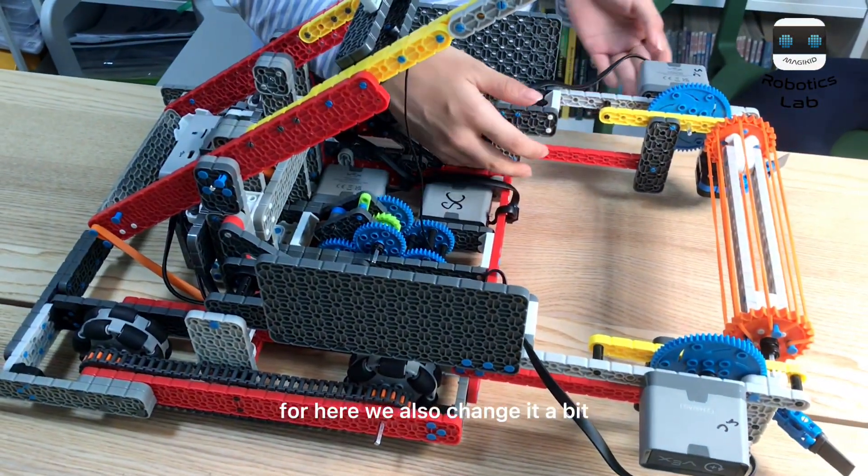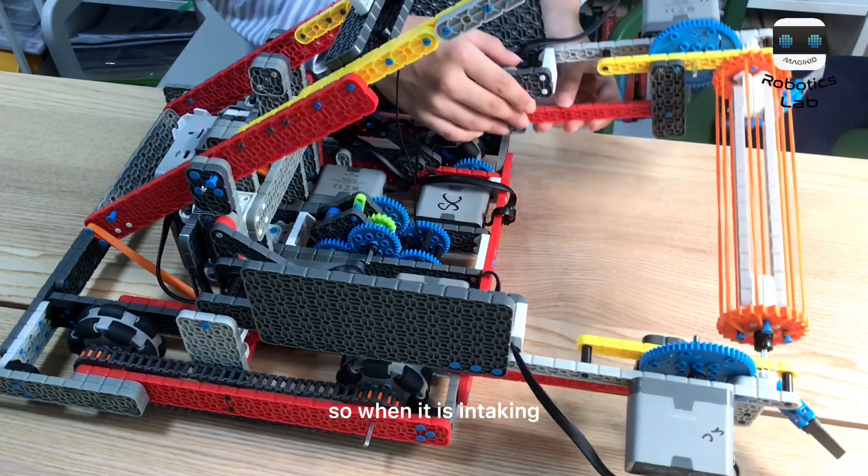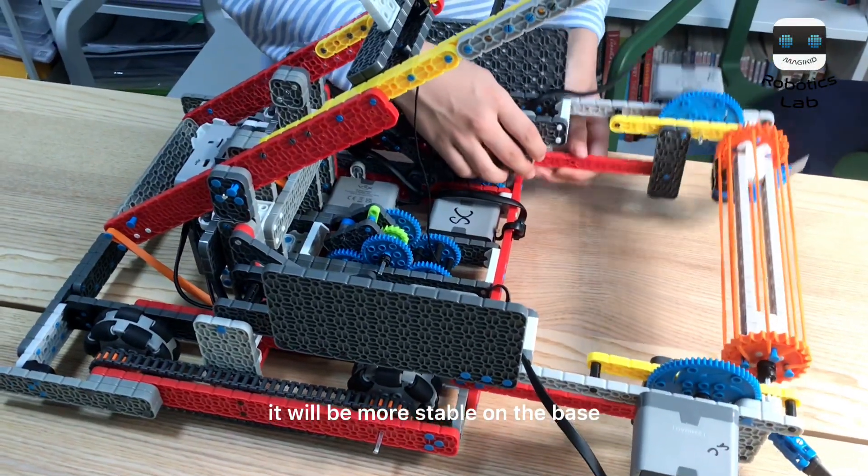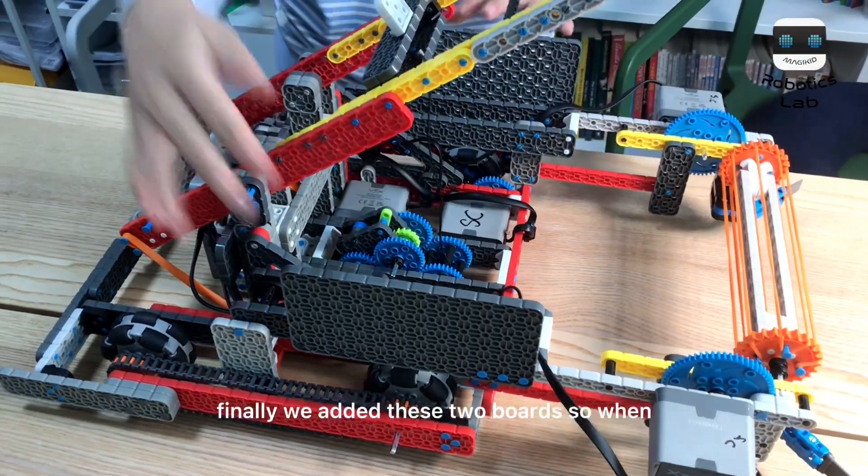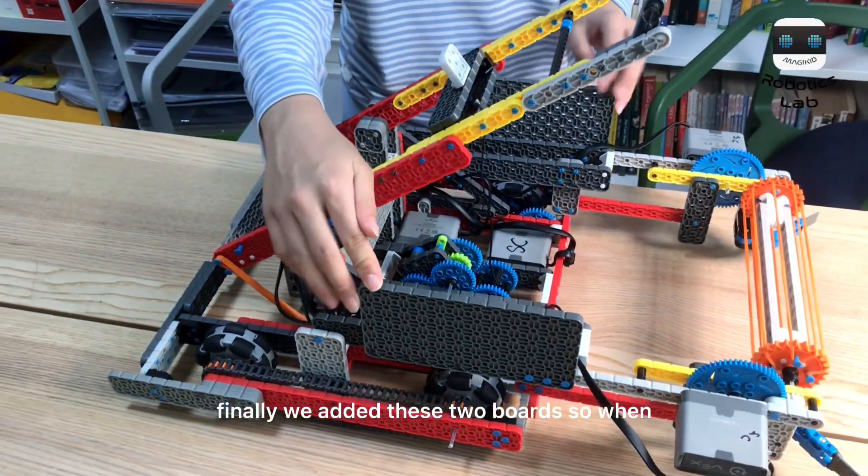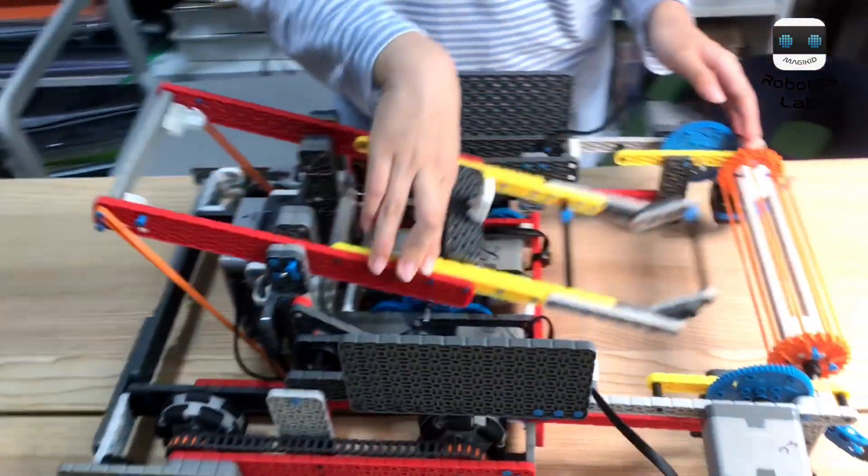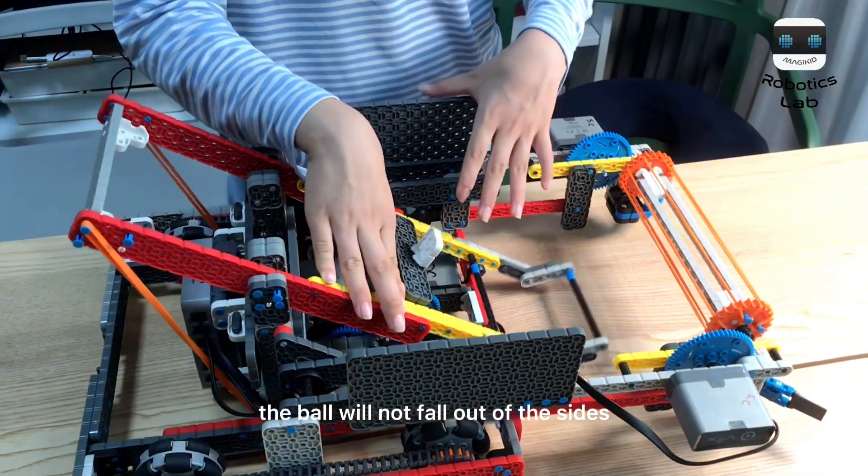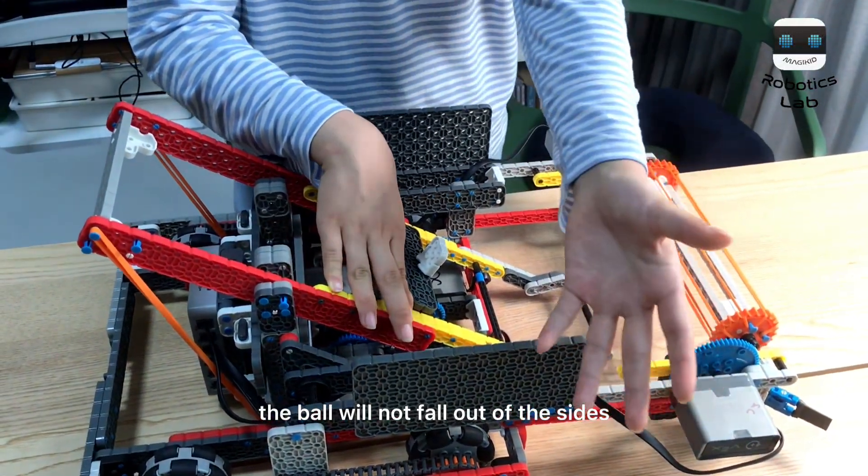For here, we also changed it a bit, so when it is intaking, it will be more stable on the base. Finally, we added these two bars, so when our teammates are passing to us, the ball will not fall out of the sides.